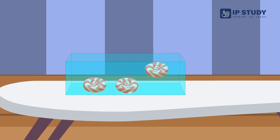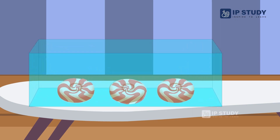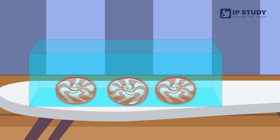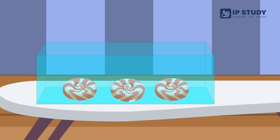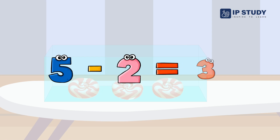See these candies. There are 5 candies in the box. Now I give 2 candies to my friend. Then I have 3 candies in the box. 5 minus 2 is equal to 3.